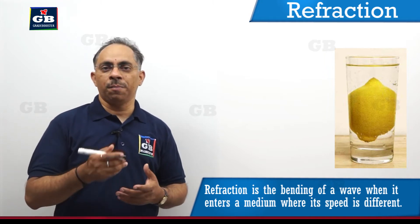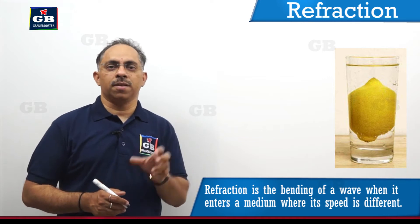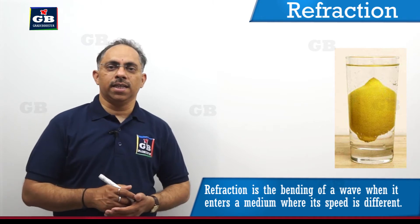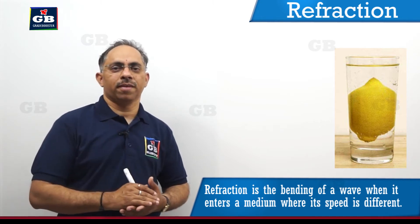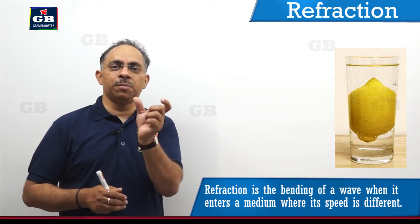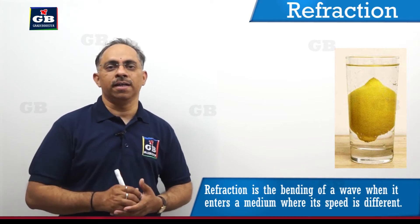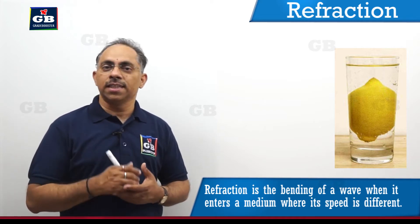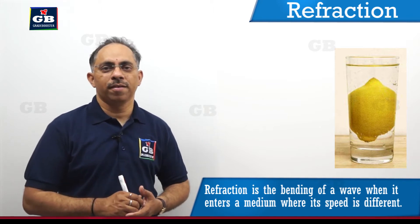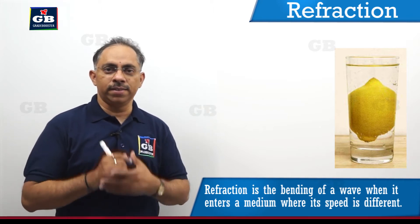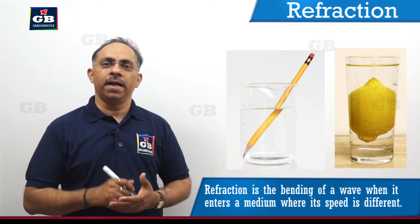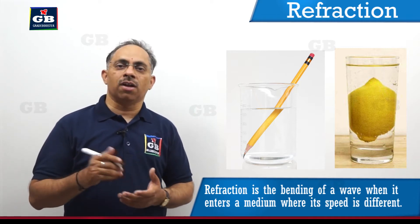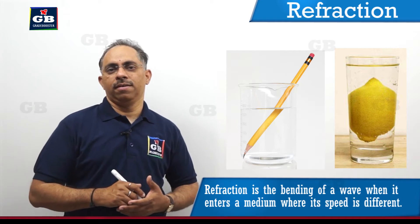Why is the pencil appearing to be bent? Another example: in shopping malls and stores, they put a glass of water with a lemon in it. If you see from outside the glass from sideways, the lemon appears to be very big — the size appears larger — but actually it is not. The actual size of the lemon is smaller than what it appears. Why is the lemon appearing to be bigger?